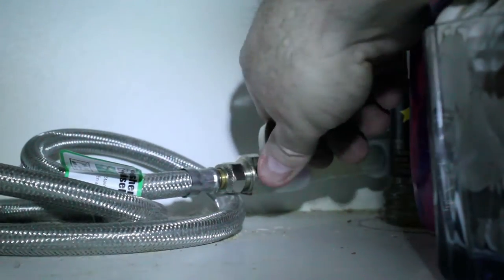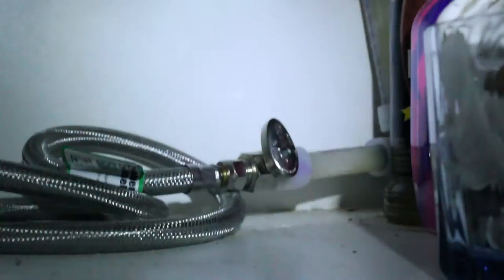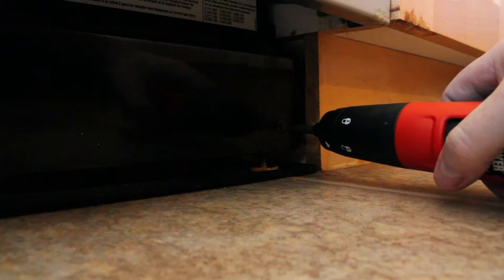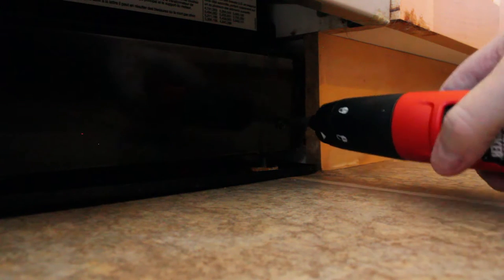First thing you want to do is shut off the main water supply to the dishwasher. Next step is to remove the kick plate to get at the water supply line and the drain line.